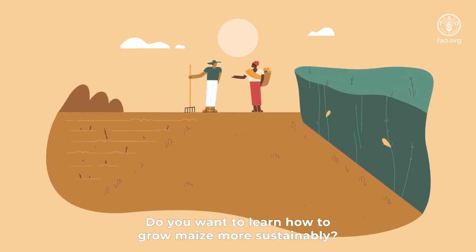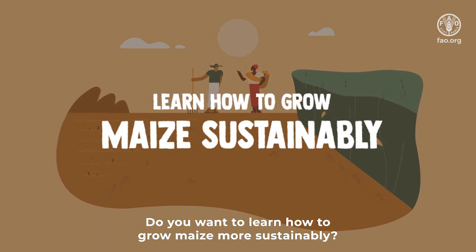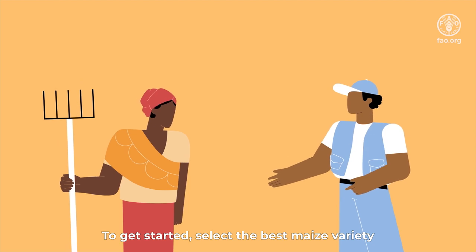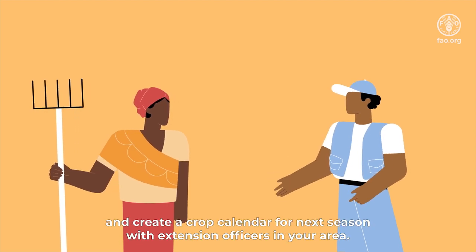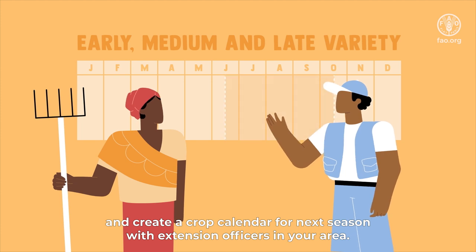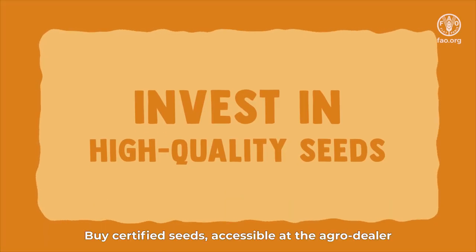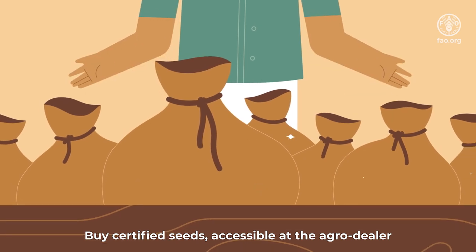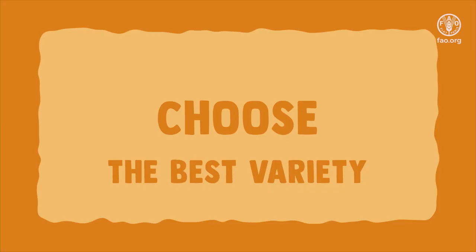Do you want to learn how to grow maize more sustainably? To get started, select the best maize variety and create a crop calendar for next season with extension officers in your area. Buy certified seeds, accessible at the agro-dealer, recommended by the Agri-Business Hubs.